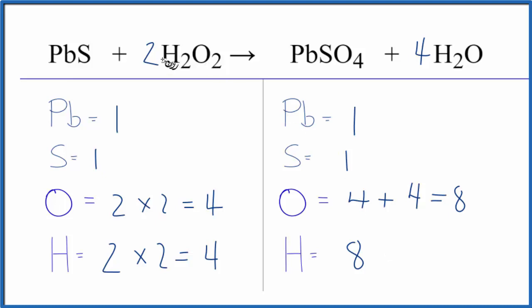And it looks like if I change the H2O2 to four, that would give me eight hydrogens and eight oxygens. And we'd be balanced. Let's do that. So I put a four here for the oxygens. Two times four, that gives me eight. Two times four hydrogens, that gives me eight.